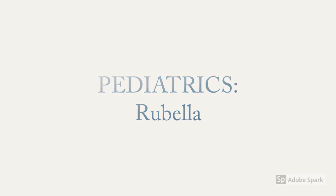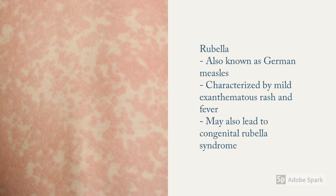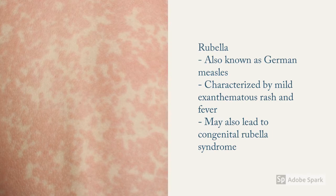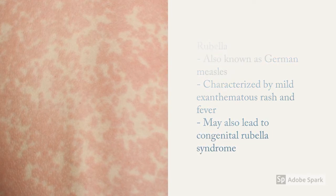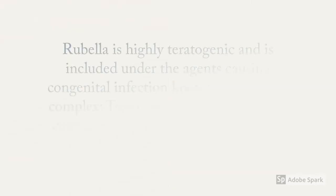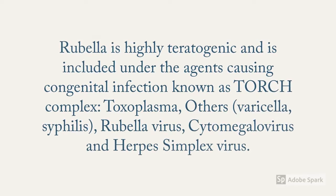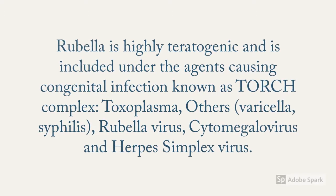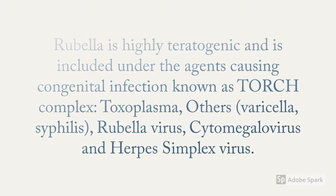Rubella is also known as German measles and is characterized by mild exanthematous rash and fever. It may also lead to congenital rubella syndrome in neonates whose mothers have been infected with rubella during pregnancy, especially within the first trimester. Rubella is highly teratogenic and is included under agents causing congenital infection known as the TORCH complex, which includes toxoplasma, varicella, syphilis, rubella virus, cytomegalovirus, and herpes simplex virus.